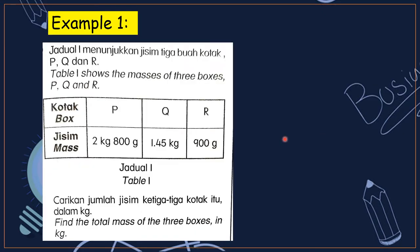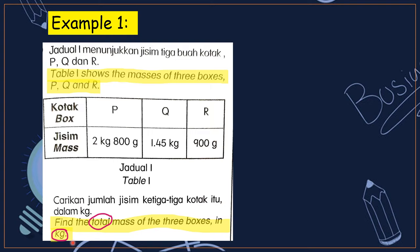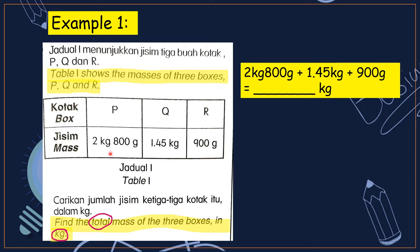Look at example 1. Table 1 shows the masses of 3 boxes P, Q and R. Find the total mass of the 3 boxes in KG. First step, you have to find out the keywords. The keywords are 'total' and 'in KG', meaning your final answer must be in KG. Total means we have to use addition, so we just add up P, Q and R, and the final answer you write in KG.